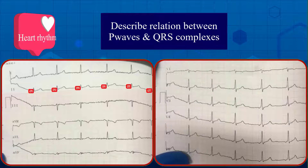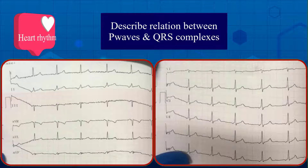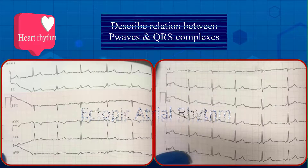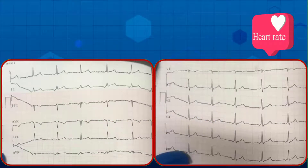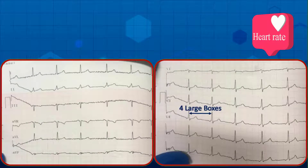Here there is a P wave before every QRS complex, so the P-QRS ratio is 1. There is no dropped beat, so the AV node functions properly. The PP interval, RR interval, and PR interval are all stable, so the rhythm is regular. Since the P waves are not from the sinus node, the underlying heart rhythm is called ectopic atrial rhythm.